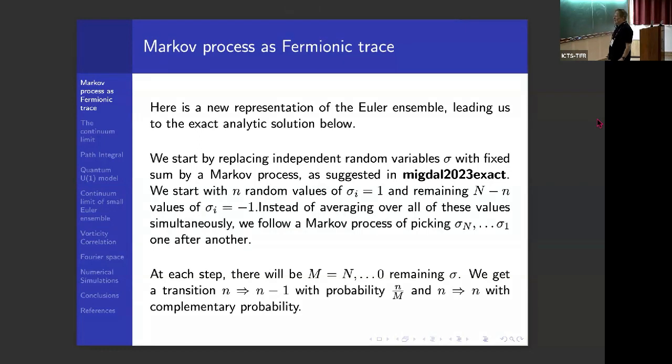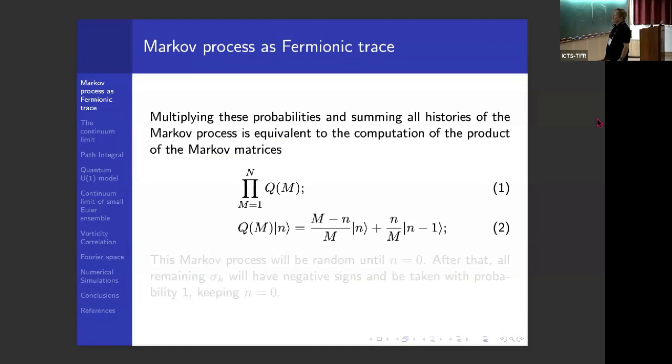At each step, there will be some number M, M capital remaining sigmas. In other words, we get transition from N to N minus one with probability N divided by M, and N will remain with complementary probability. Multiplying this probability and summing over all histories of the Markov process is equivalent to computation of the product of Markov matrices. That's the theory of Markov process. So there is matrix with elements corresponding to probabilities of these two steps. So this is probability of the number of positive sigmas remaining intact, and this is the probability of this number diminishing by one.